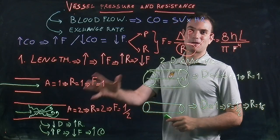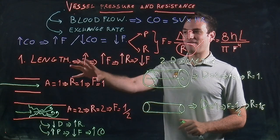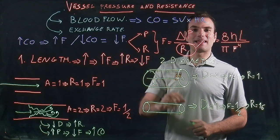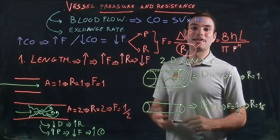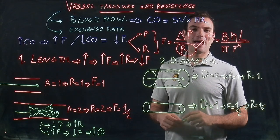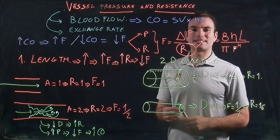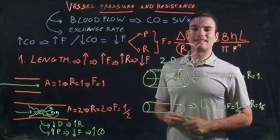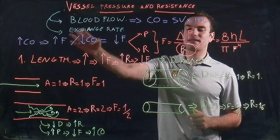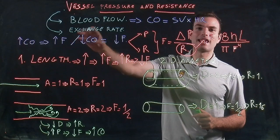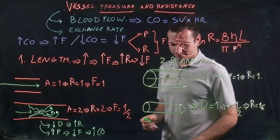So we have looked at vessel length and diameter and how they affect resistance and flow. Next, we are going to look at the different parameters that control the exchange of gases and nutrients at the capillary beds.